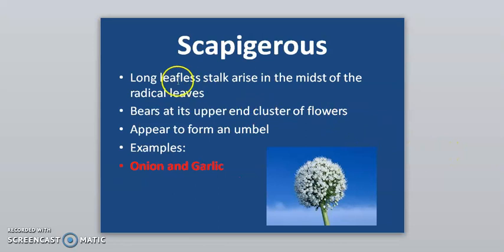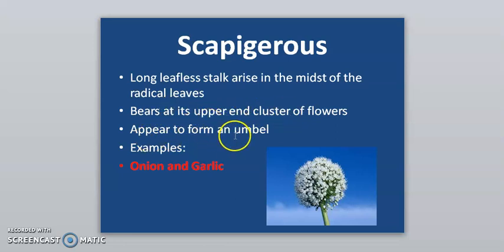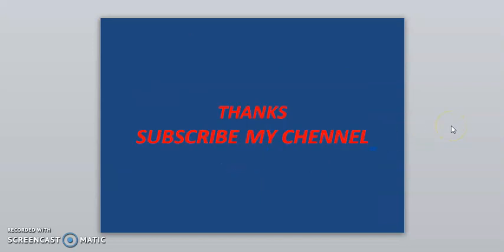Scapigerus: a long leafless stalk arises in the midst of radical leaves and bears at its upper end a cluster of flowers arranged in an umbel — example is onion and garlic. Thank you very much; subscribe to my channel for further videos.